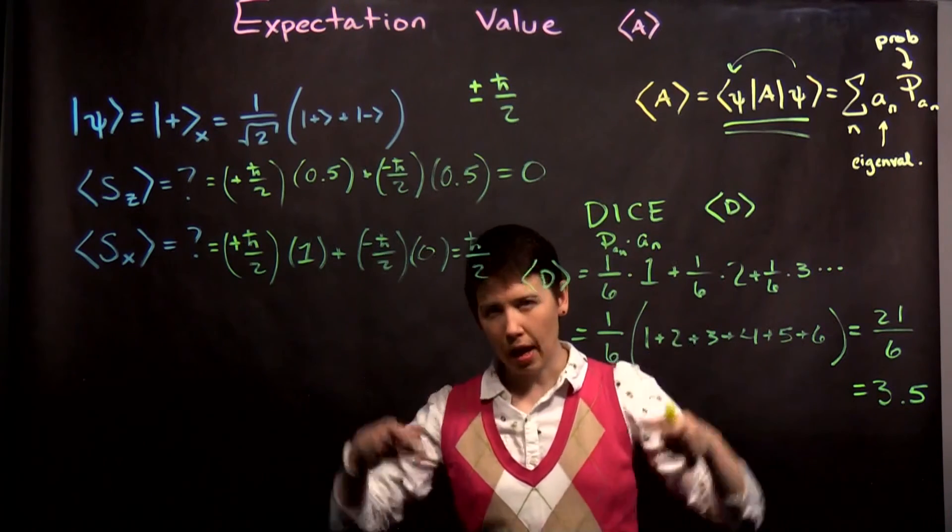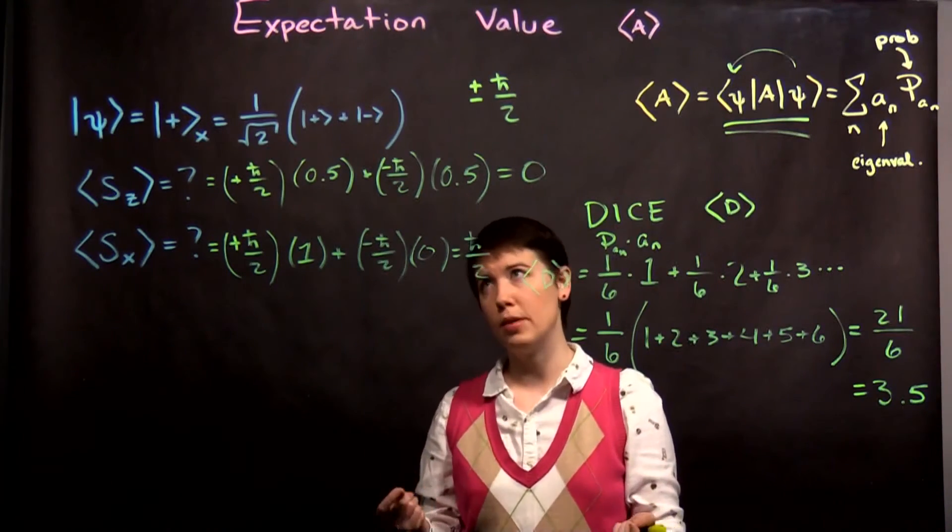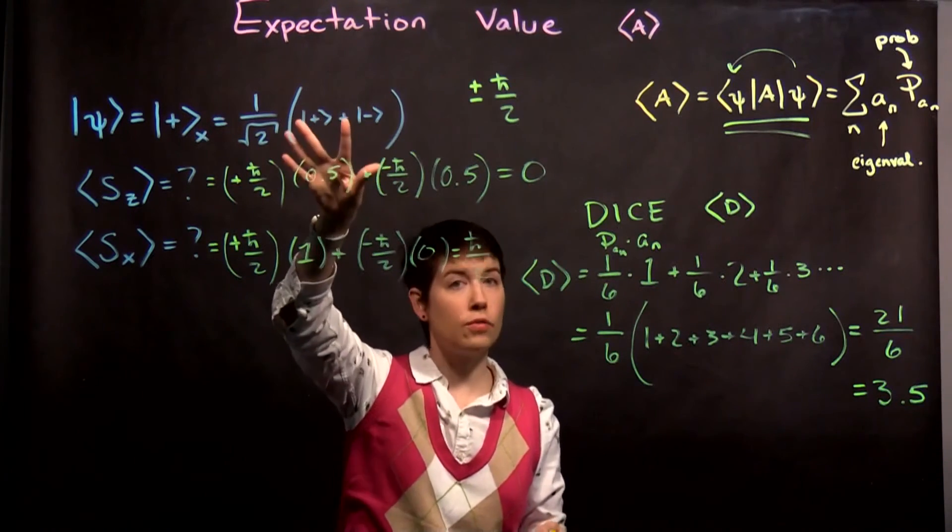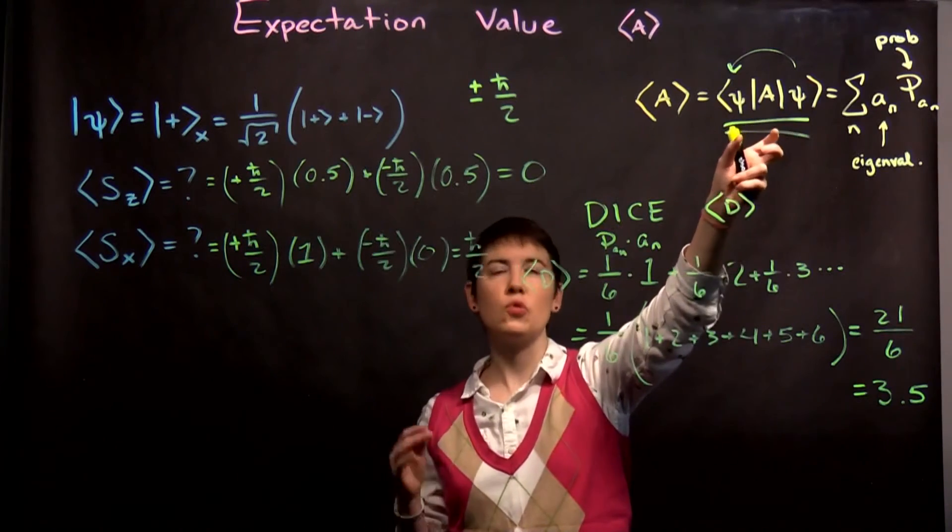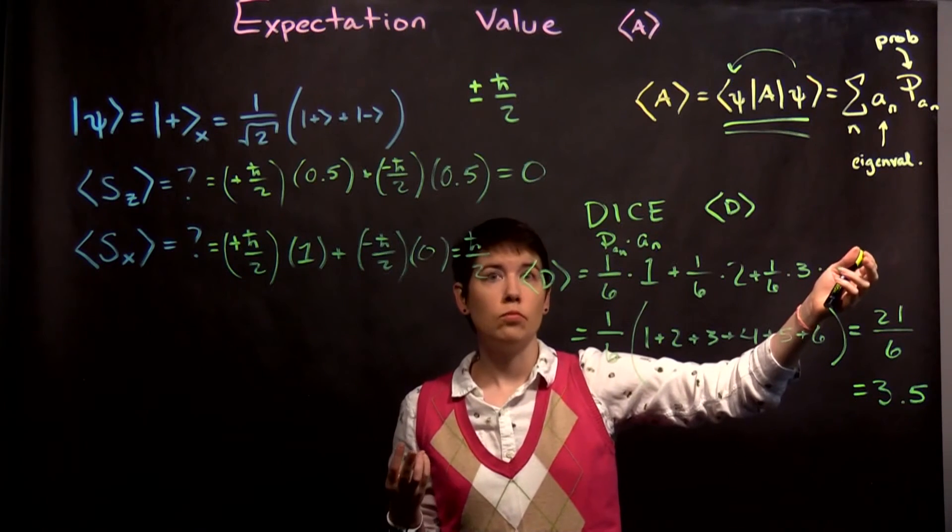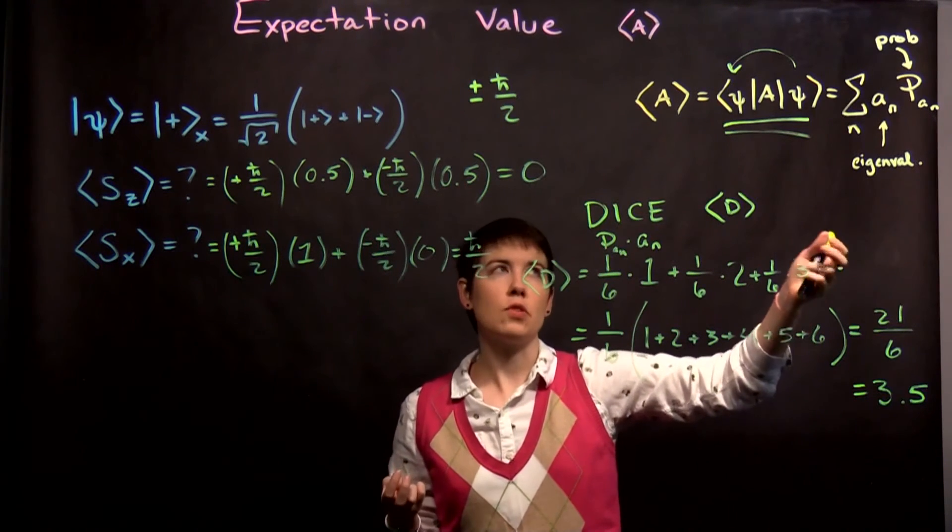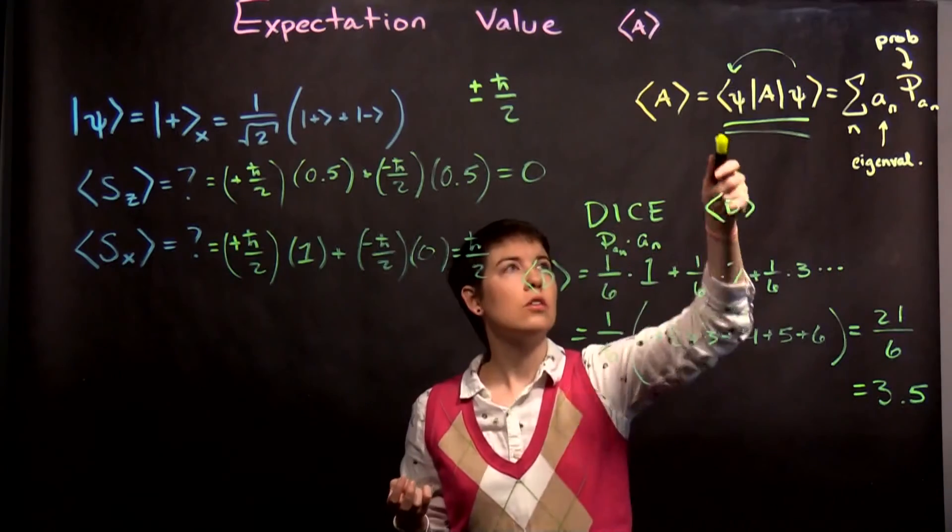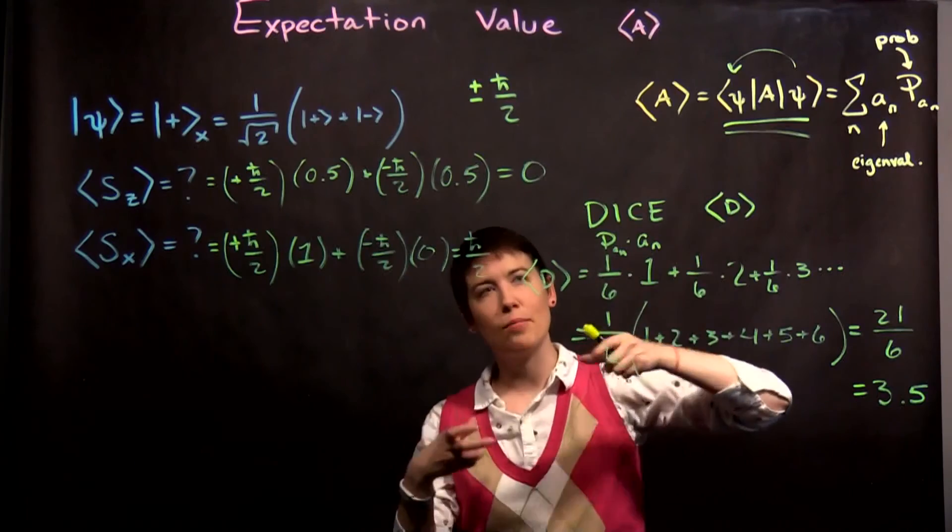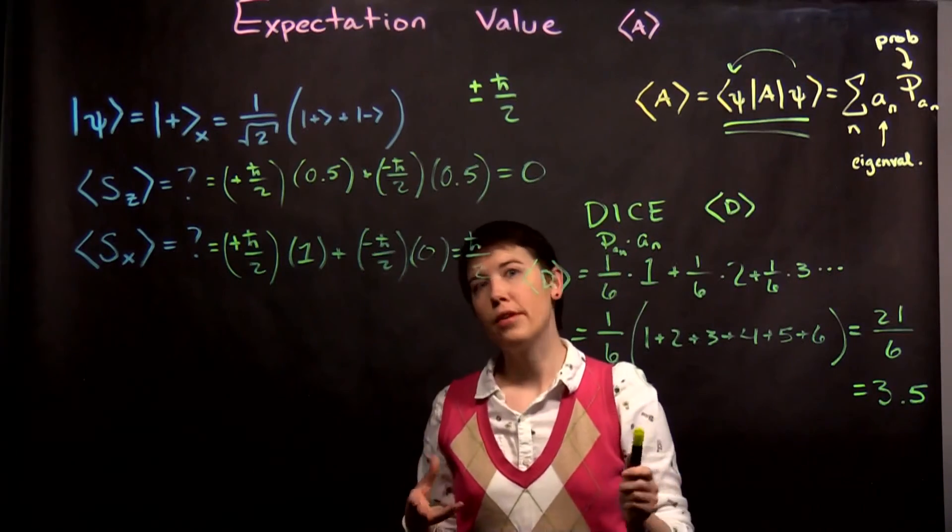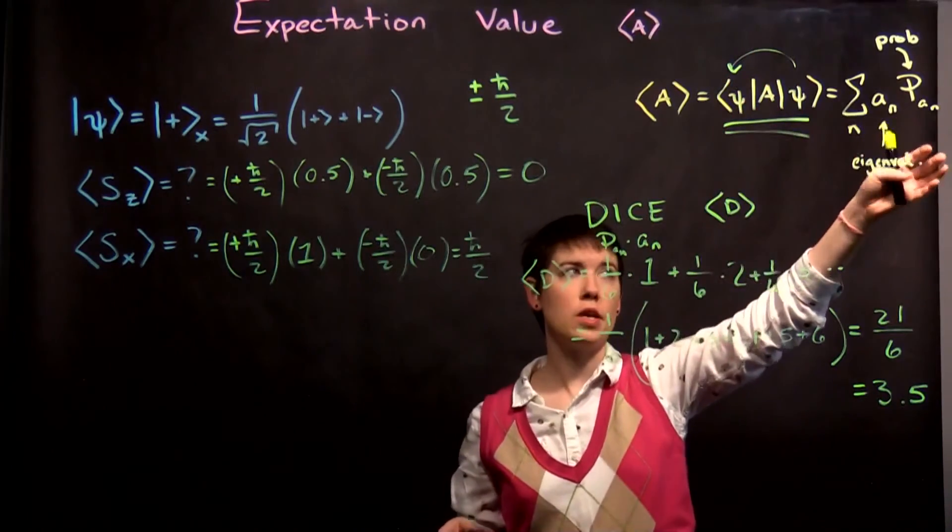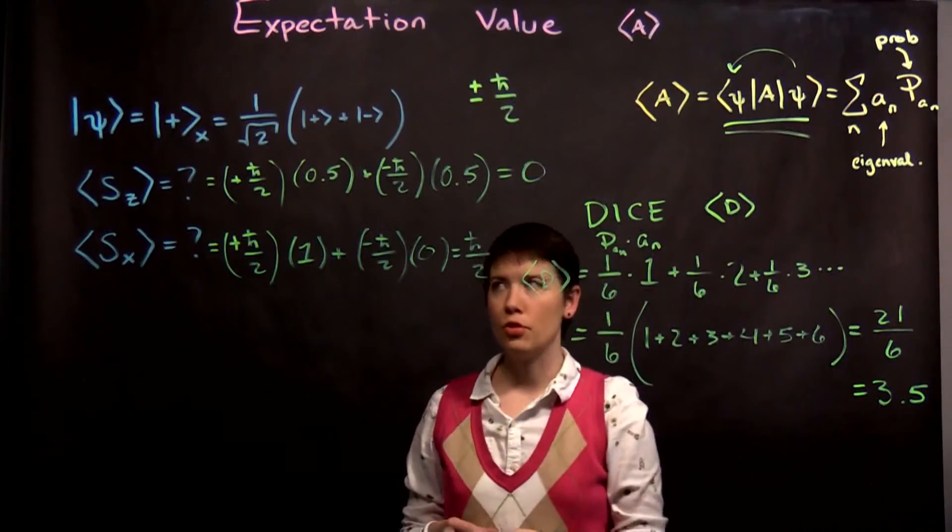That is inherently baking in those probabilities, because we know that the probabilities are really coming from the coefficients here. So this is one way that you can just do this directly if you don't already know the probabilities. Technically, you still have to know your eigenvalues, because the eigenvalues are baked into that operator. This is a shortcut if you don't know your probabilities already. Otherwise you can just calculate it directly that way.